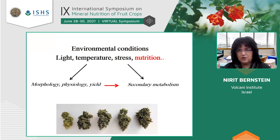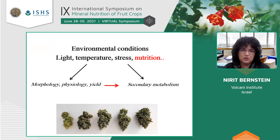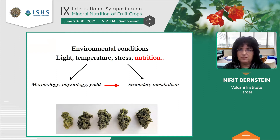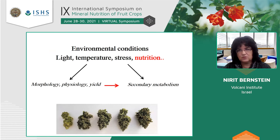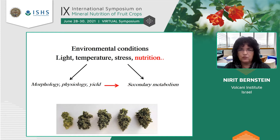What kind of environmental conditions? We're at a nutrition conference, so obviously we're going to focus on nutrition today. But overall, secondary metabolites in plants are affected by light, by temperature, by stress conditions, and today I'll convince you that in cannabis, secondary metabolism — and of course production and morphology — are affected by nutrition.